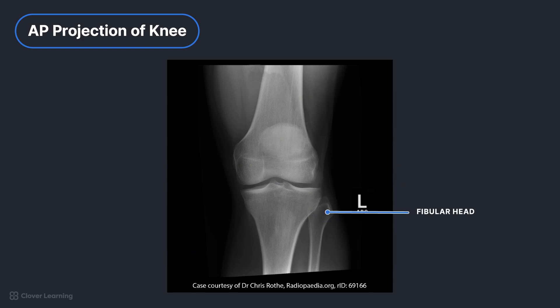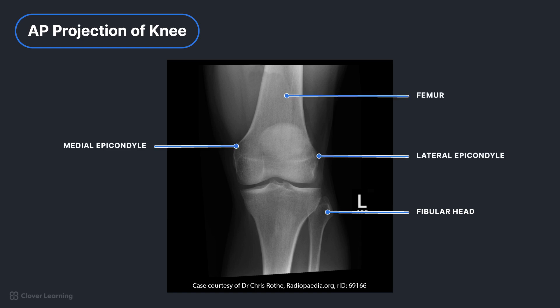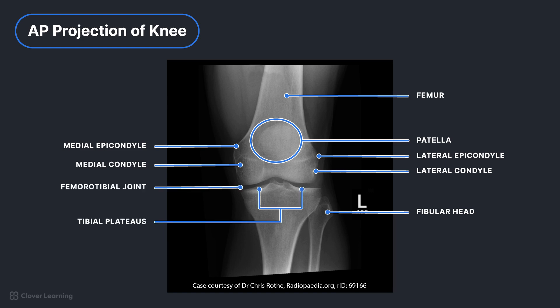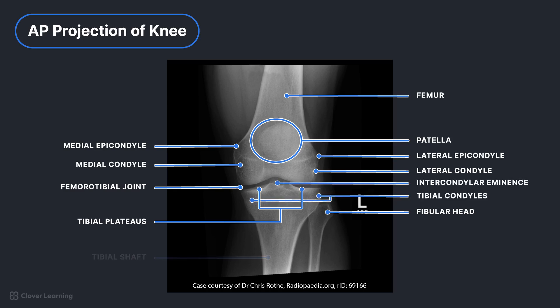Can you identify the anatomy? Working from superior to inferior, we can clearly identify the distal femur, medial and lateral femoral epicondyles and condyles, patella, femorotibial joint space, articulating facets of the tibia or tibial plateaus, medial and lateral tibial condyles, intercondylar eminence, shaft of the tibia, and head and shaft of the fibula.